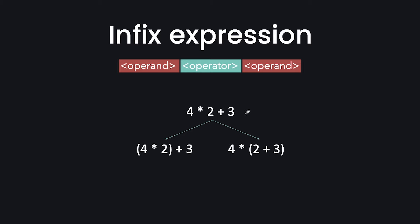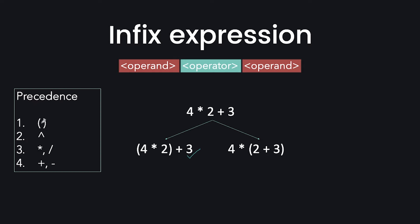The right way to evaluate this expression is to do multiplication first, then addition. This is because of operator precedence. We normally follow precedence rules for common operators. When we talk about precedence, brackets have the highest precedence. After that we have the exponential sign.